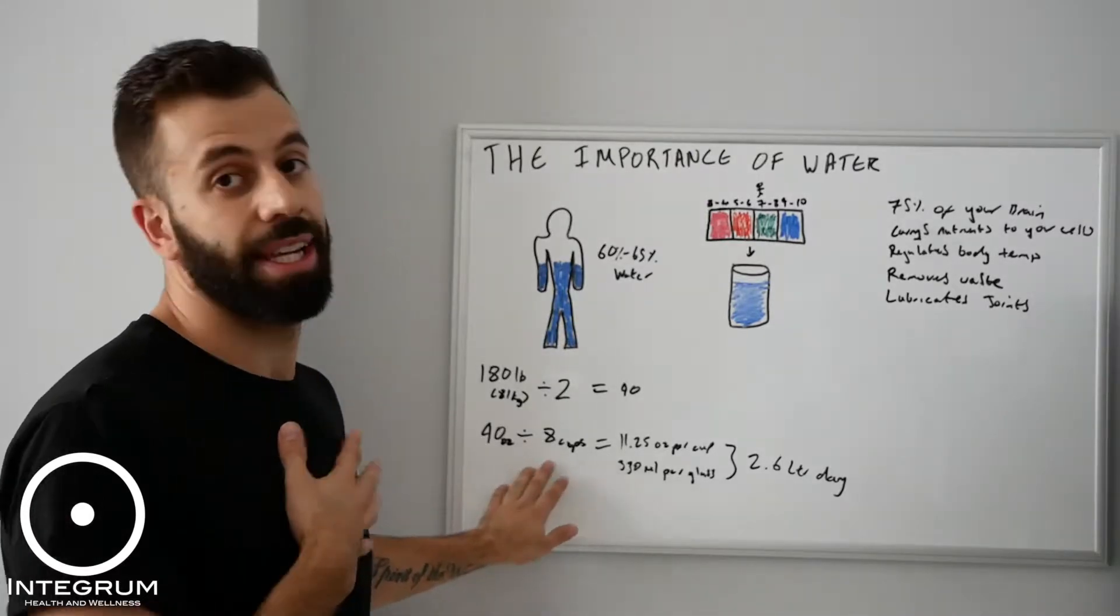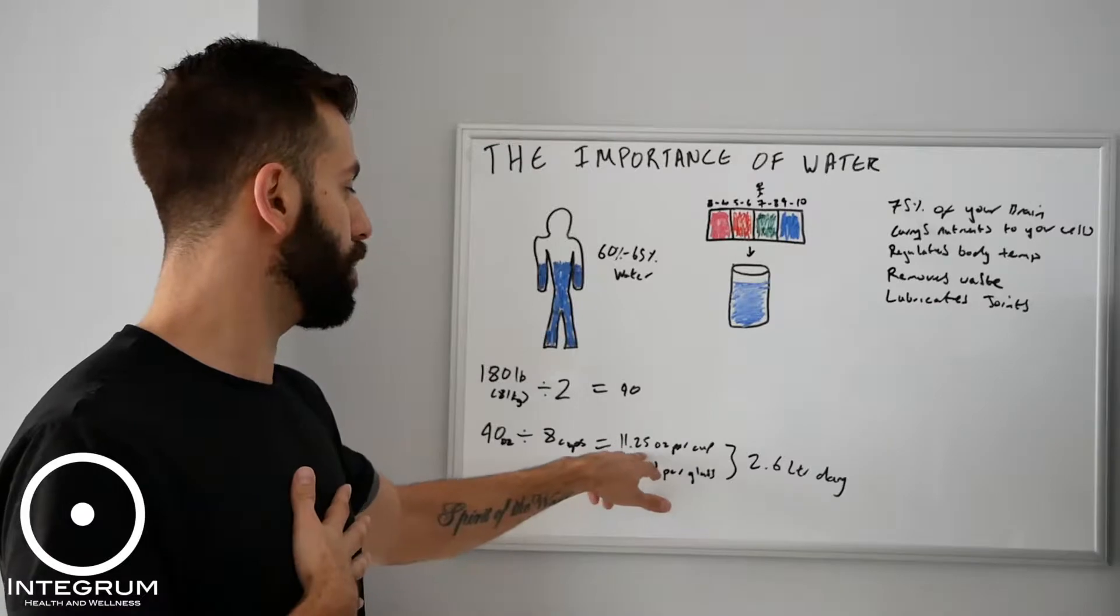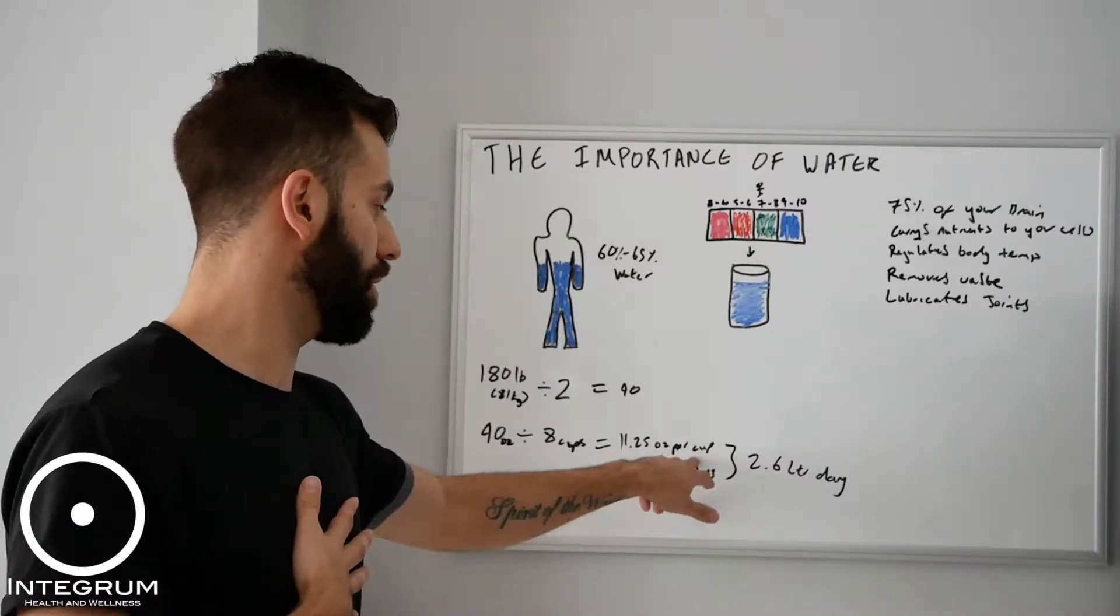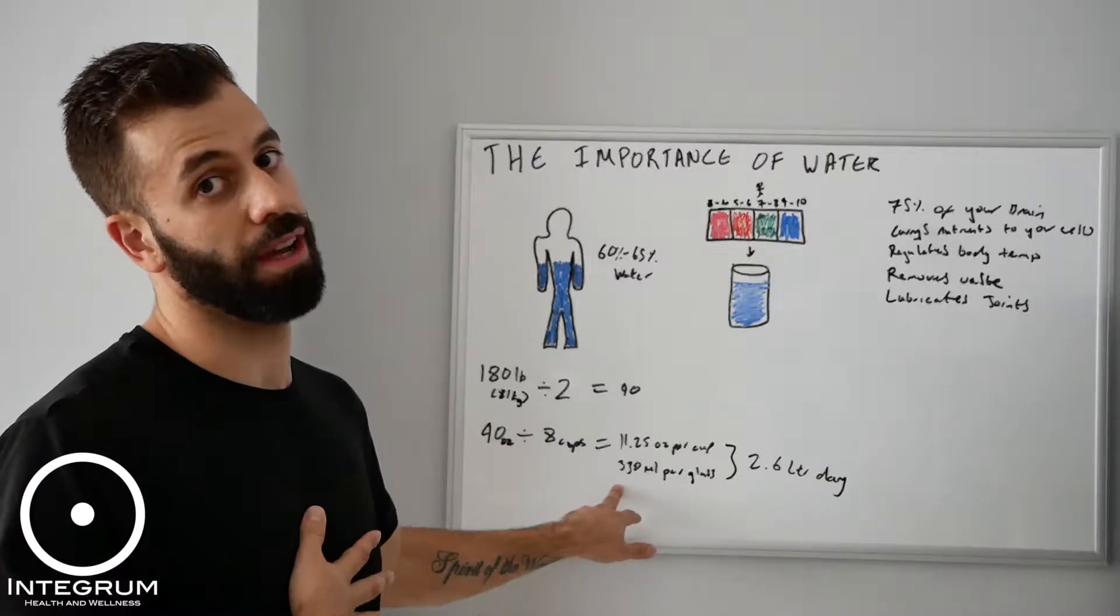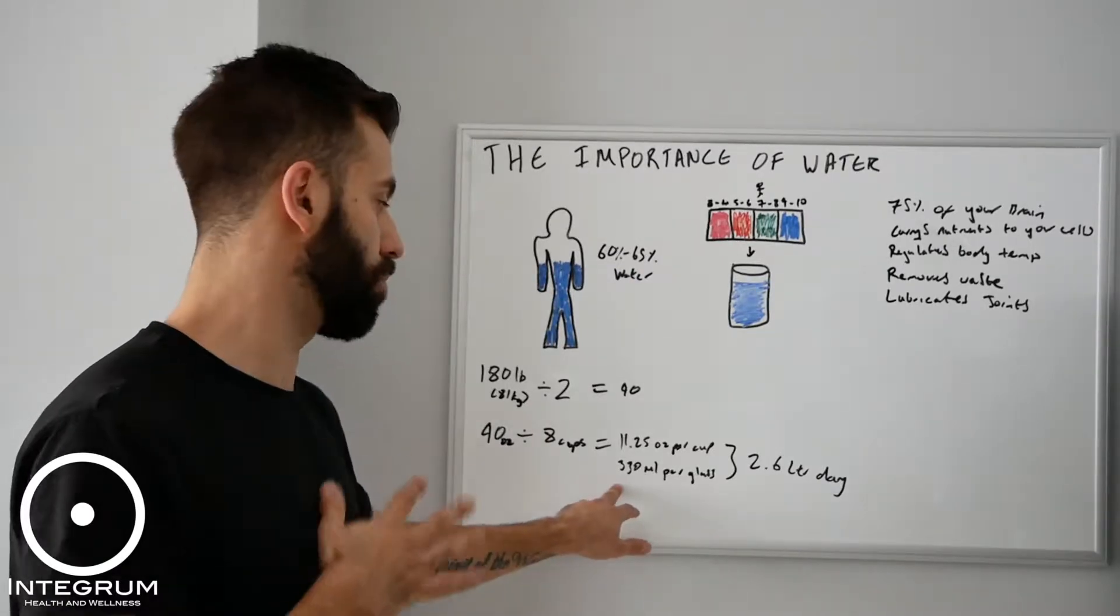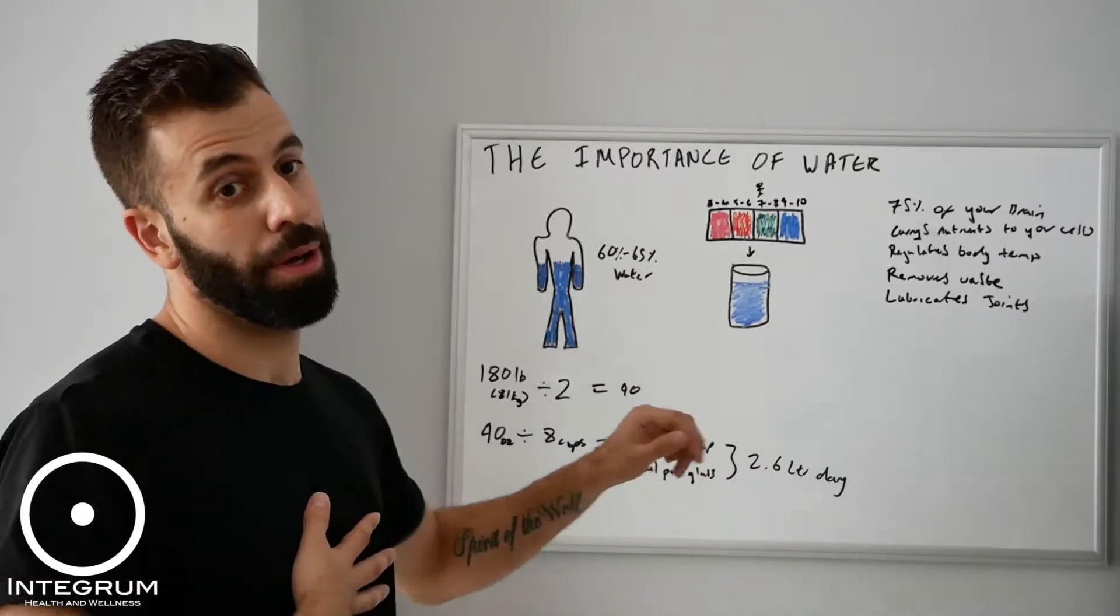Let's say that I'm going to drink it in 8 cups or 8 glasses. I then divide it by that to get 11.25 ounces per cup. That's 330 milliliters in UK terms, roughly. It works out to 2.6 liters per day.